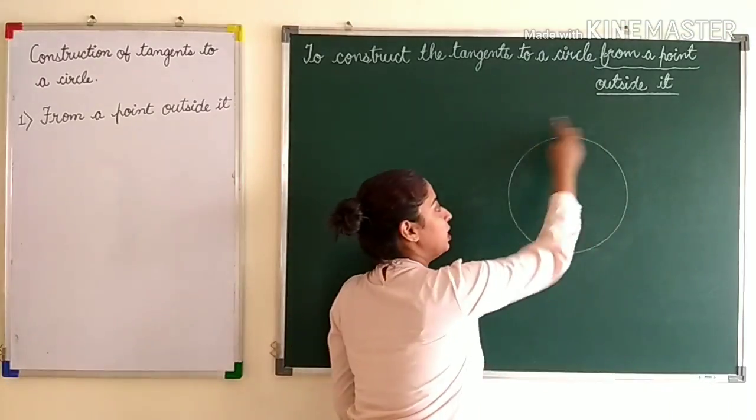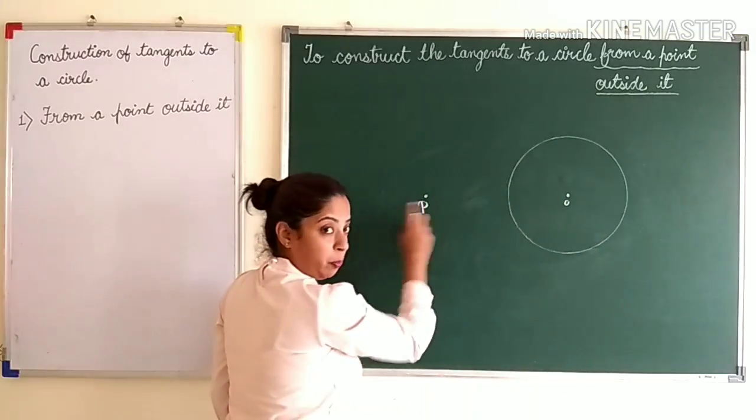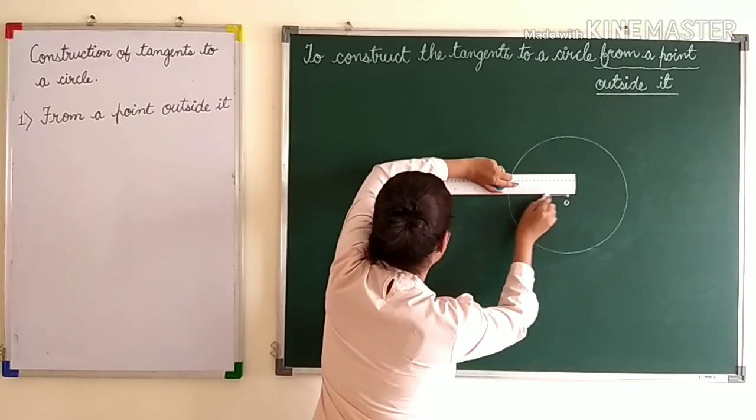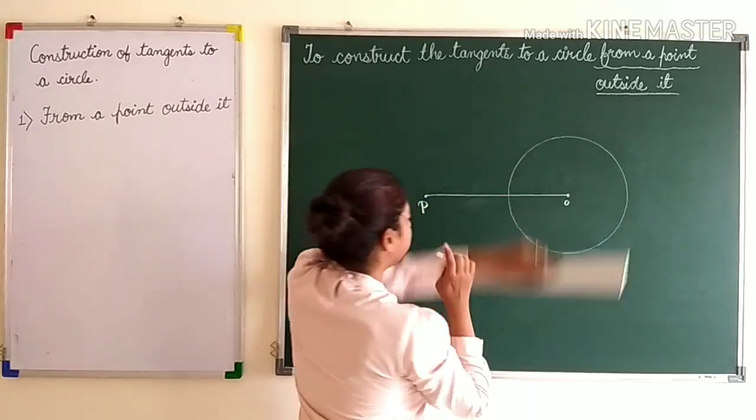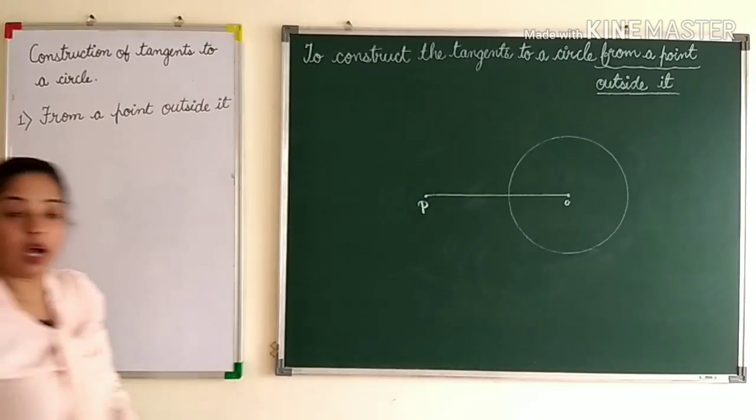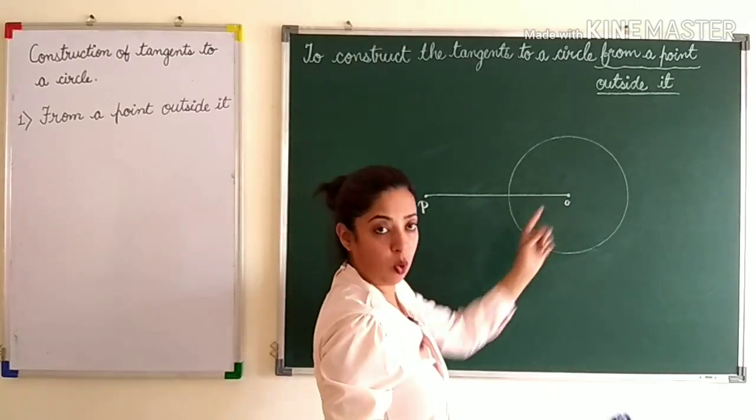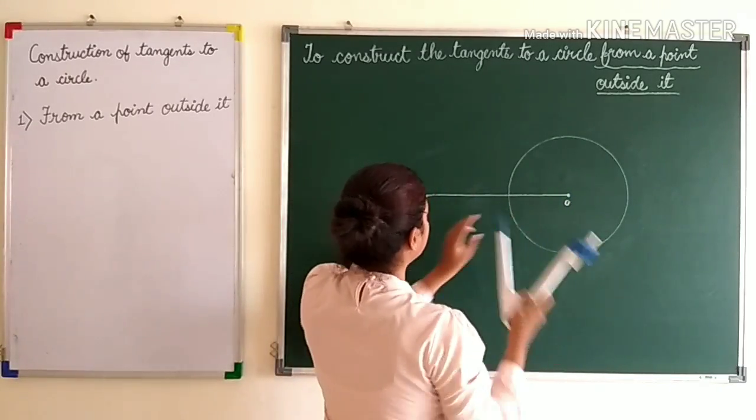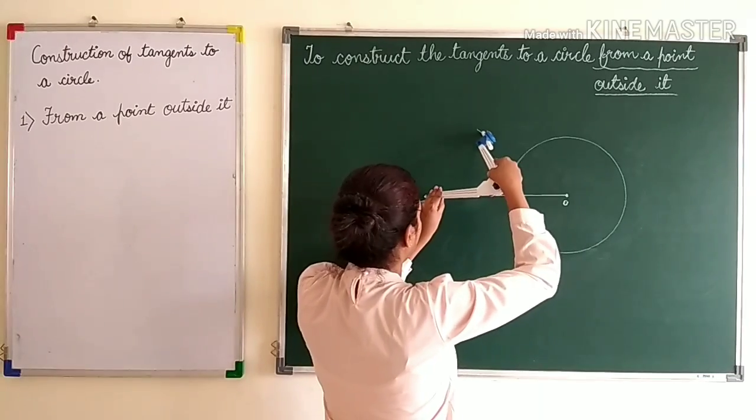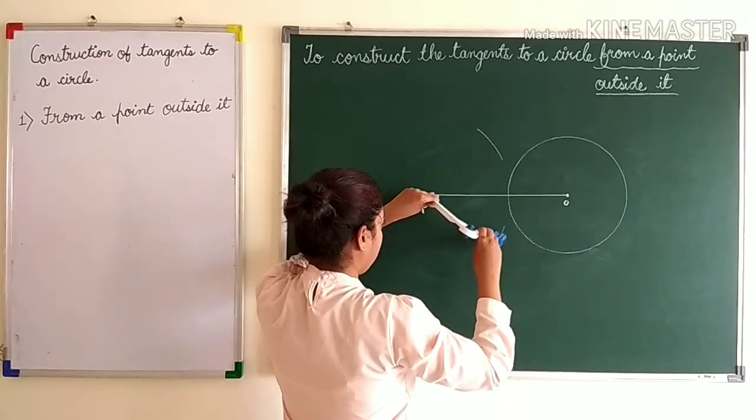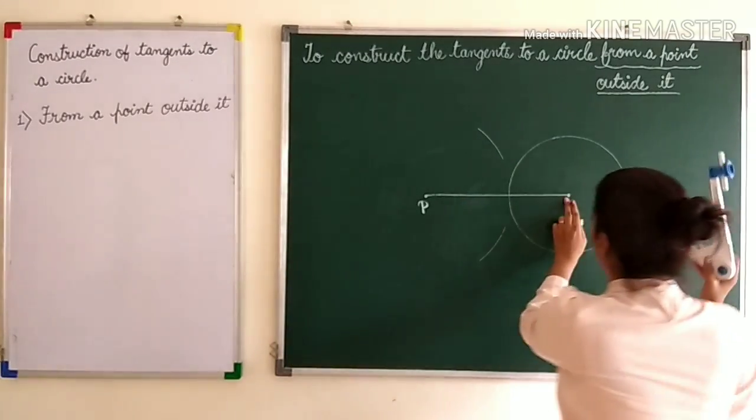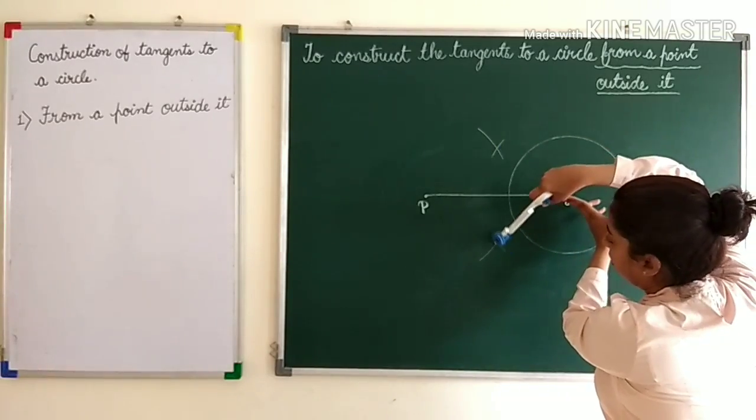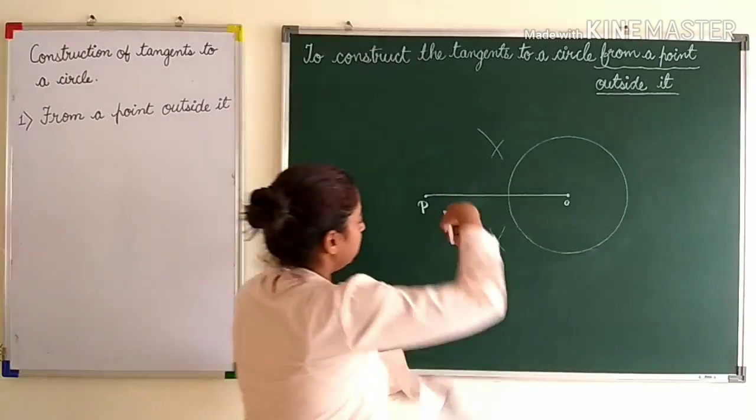So you can see a circle with center O and there is a point P outside it. First step is joining OP. Our second step would be bisecting OP. So we open it such that it is more than three-fourths. Make an arc here, make an arc here. From point O, again cut these arcs. Now join these two arcs.